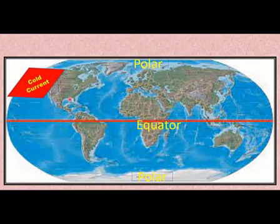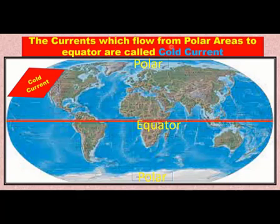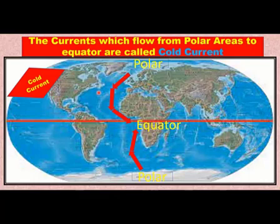Next we are going to study about cold currents. Again, you can see this through the map. The currents which flow from polar areas to the equator are called cold currents. As shown, the currents which are moving from polar areas towards the equator — this is called a cold current.